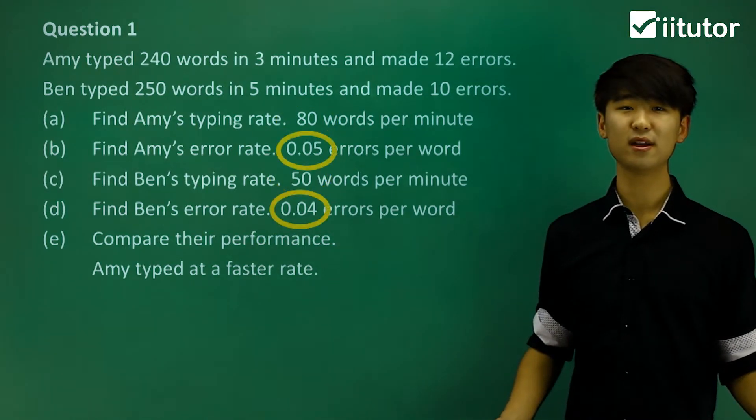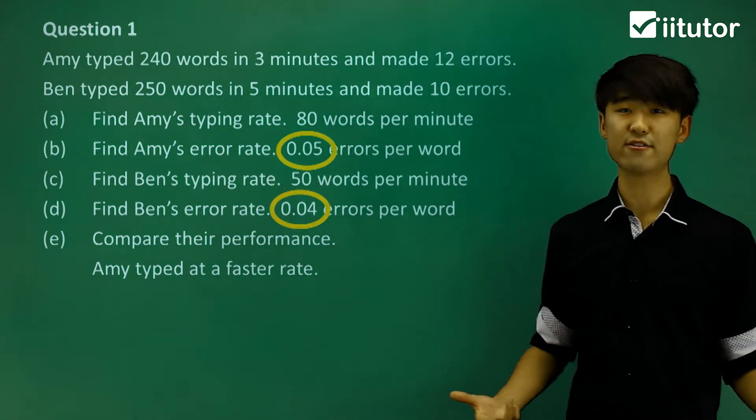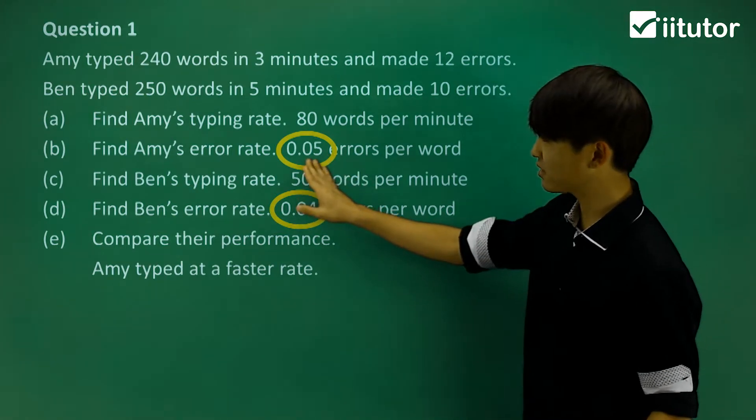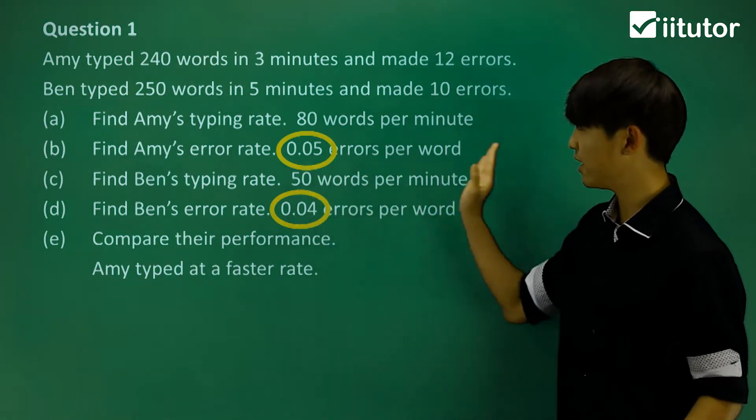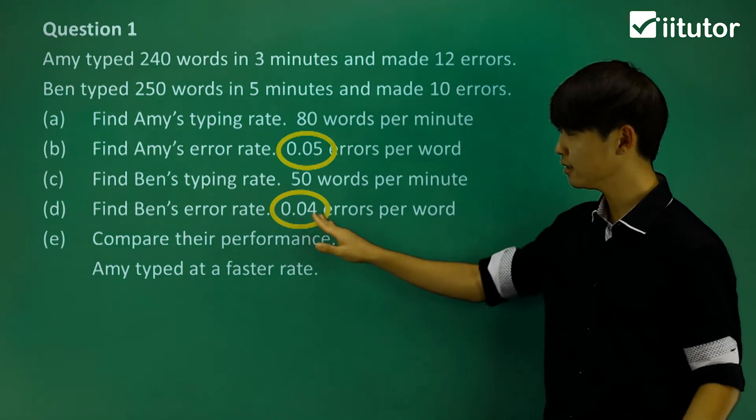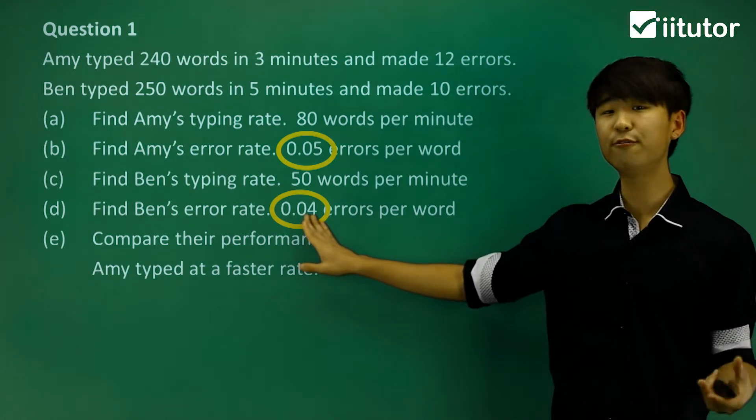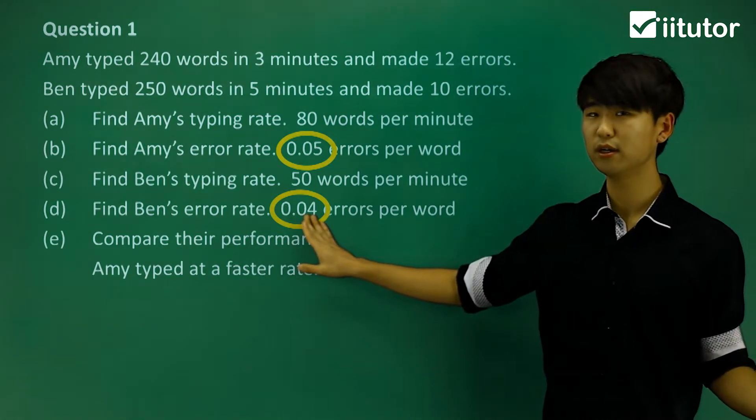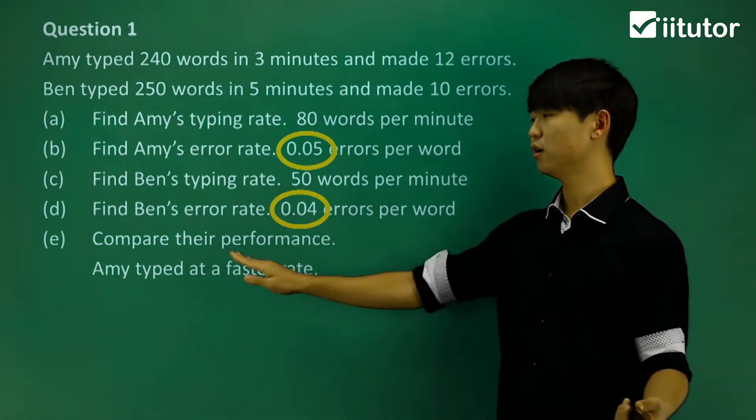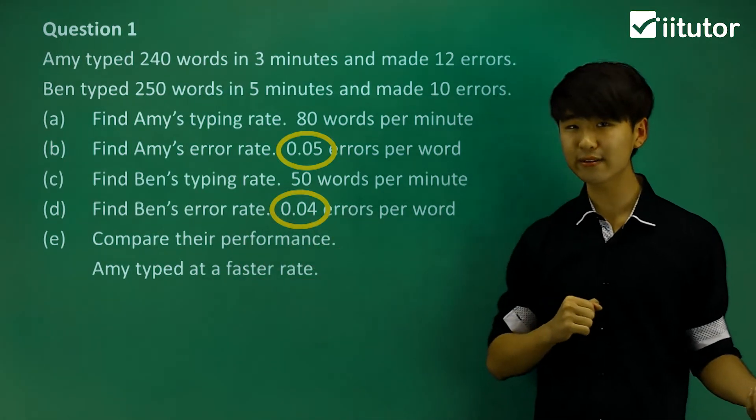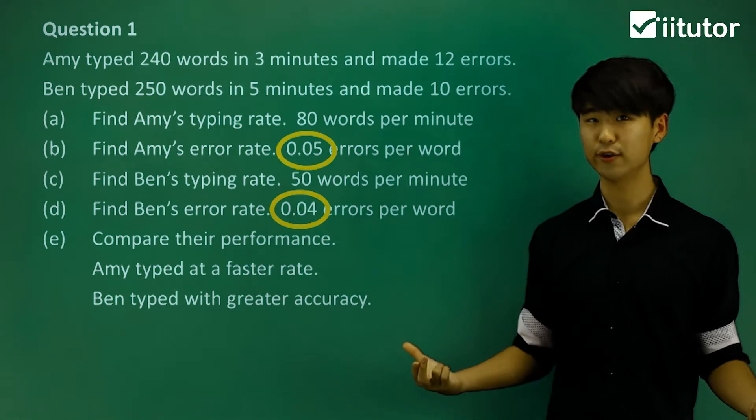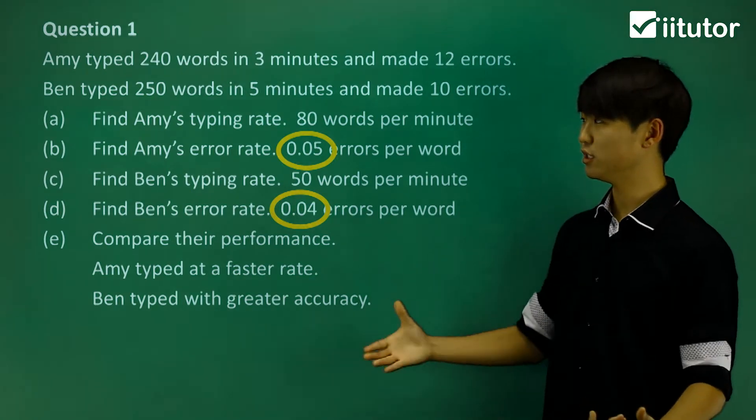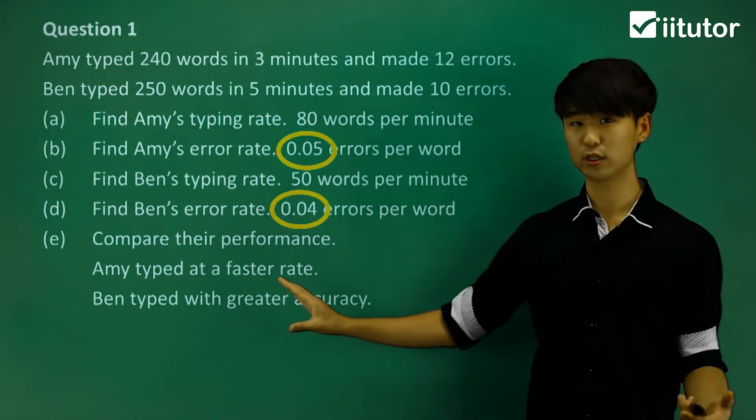What about the errors? So we can see that, although Amy typed faster, she made 0.05 errors for every word, while Ben, he only made 0.04 errors for every word. So again, looking at their performance, although Amy typed at a faster rate, Ben typed with a greater accuracy. So using rates, we're able to draw these sort of conclusions.